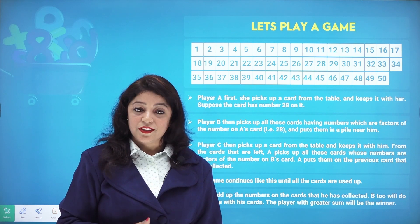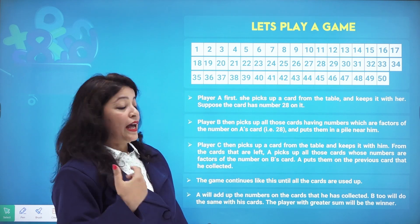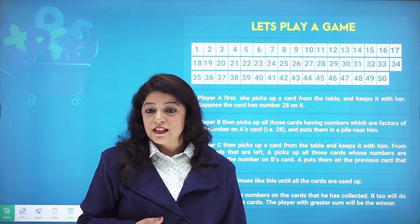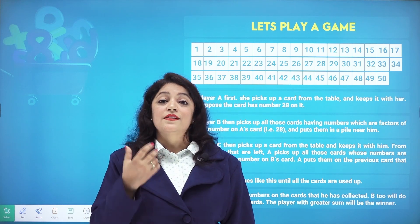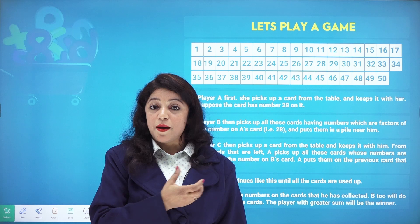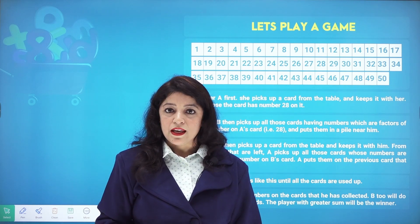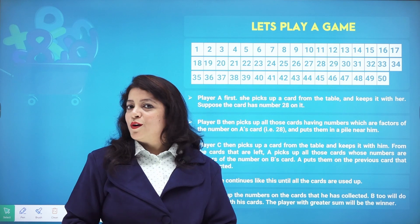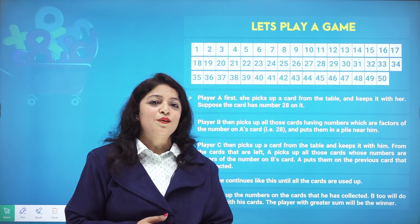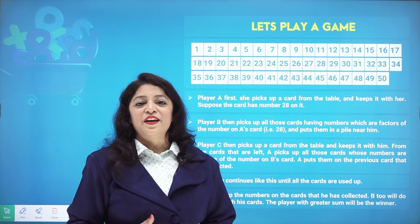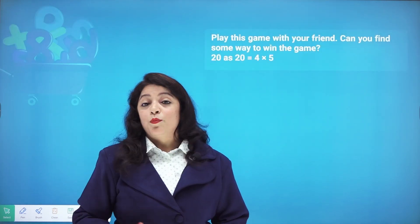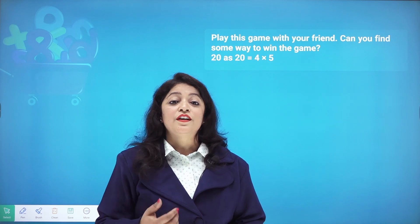To determine the winner: Player A adds up the numbers on the cards collected, Player B adds the numbers on their collected cards, and Player C does the same. The player with the greatest sum wins. Try it with your friends!